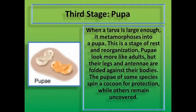Third stage: pupa. When a larva is large enough, it metamorphoses into a pupa. This is a stage of rest and reorganization. The pupa looks more like adults, but their legs and antennae are folded against their bodies. The pupa of some species spin a cocoon for protection, but others remain uncovered.